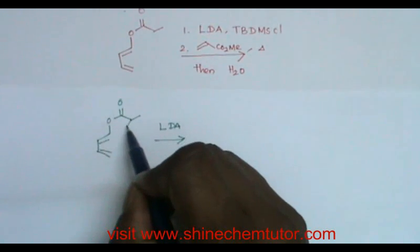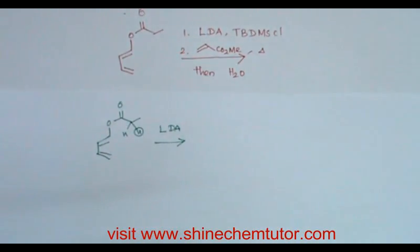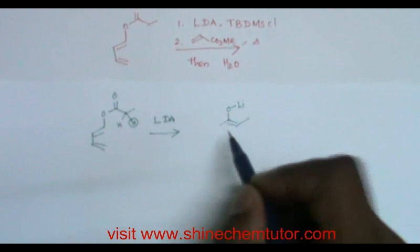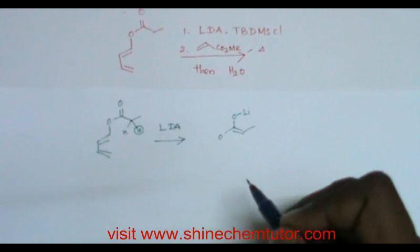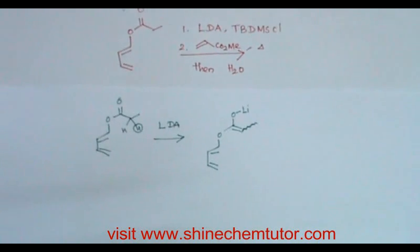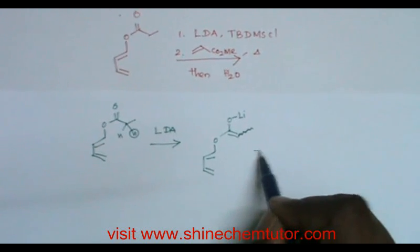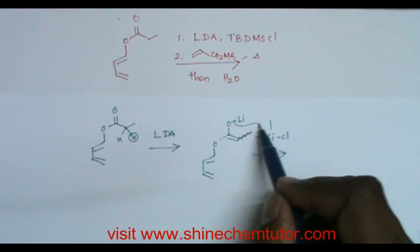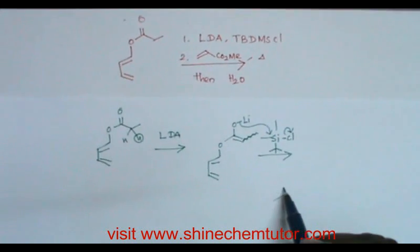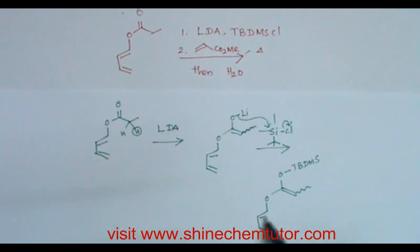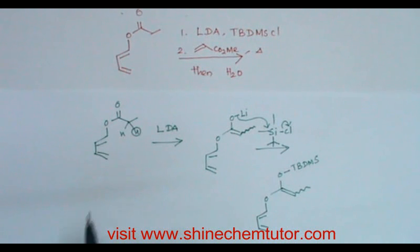When I add LDA, it will abstract the acidic alpha-hydrogen. As a result, I will get the enolate. I don't worry whether it is E-enolate or Z-enolate. Then I add TBDMS chloride (tert-butyl dimethylsilyl chloride), and what I get is O-silylation. This is what happens when I treat the starting material with LDA and TBDMS chloride.